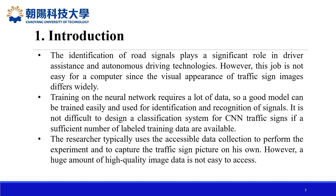The identification of road signals plays a significant role in driver assistance and autonomous driving technologies. However, this job is not easy for a computer since the visual appearance of traffic sign images differs widely. Training neural networks requires a lot of data so that a good model can be trained easily and used for identification and recognition of signals. It is not difficult to design a classification system for CNN traffic signs if a sufficient number of labeled training data are available. However, a huge amount of high-quality image data is not easy to acquire.